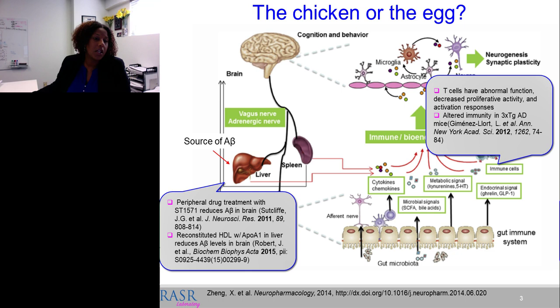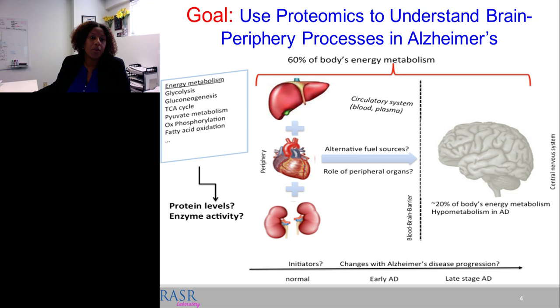Interestingly, studies using statins or reconstituted high-density lipoprotein have been effective in reducing amyloid beta in the brain, even though the targets were peripheral. This begs the question: what is the chicken and what is the egg? What are the initial causes of Alzheimer's disease? Our group's big-picture goal is to understand the brain-periphery processes in AD by looking at peripheral tissues such as liver, heart, kidney, and lung, and tracking how proteins in those tissues change with disease progression.